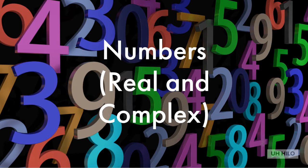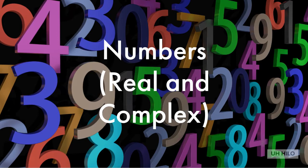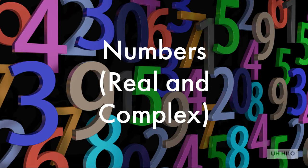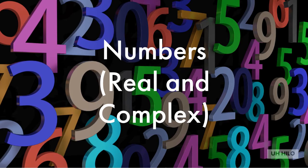Defining real and complex numbers is a bit trickier, so we'll use Wolfram for these definitions. The field of all rational and irrational numbers is called real numbers, or simply the reals. Complex numbers have a real component and an imaginary component. In particular, the complex numbers are a field C of numbers of the form x plus iy, where x and y are real numbers, and i is the imaginary unit equal to the square root of minus 1.